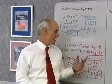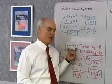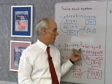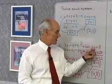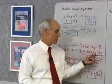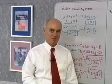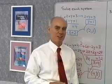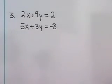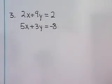Sometimes I have to use the multiplication property of equality first, to get the coefficients of one of the variables to be opposites of each other. Let's try another one: 2x plus 9y is equal to 2, and 5x plus 3y is equal to negative 8.